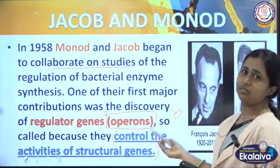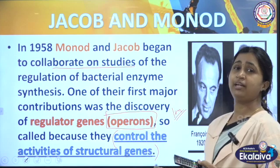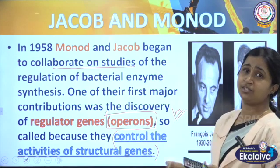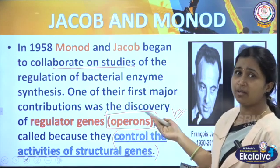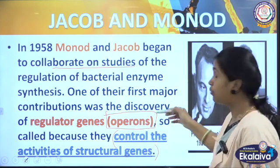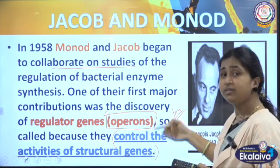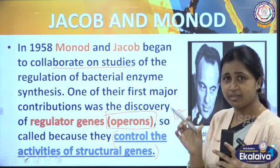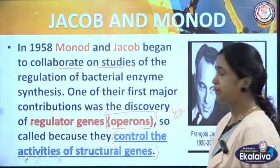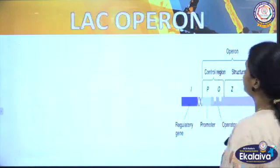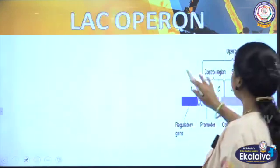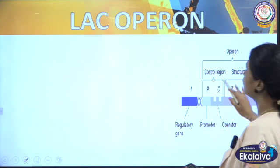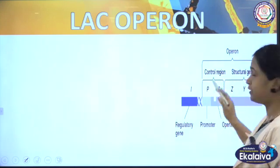Who proposed this regulation of gene expression? Mr. Jakob and Monod. And what does it control? It is going to control a specific thing. This is the structure of the Lac operon. You can see the letters I, P, O, Z, Y, A.